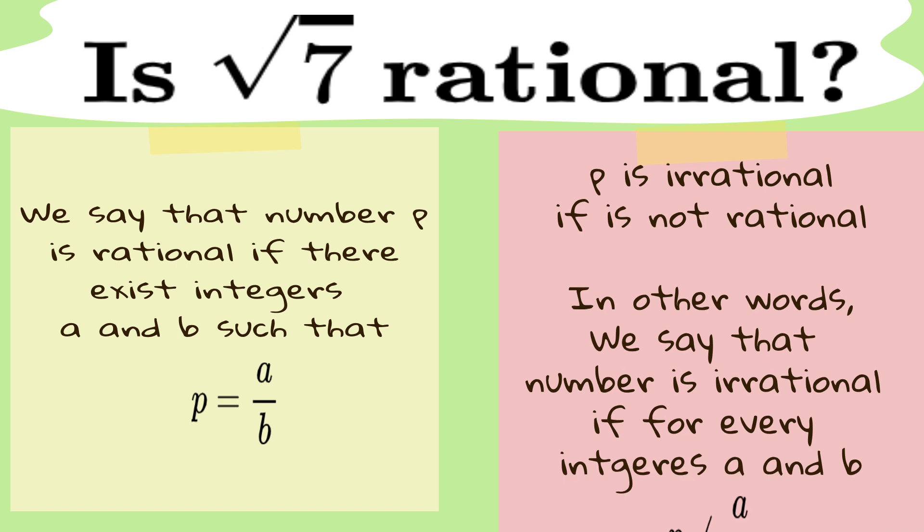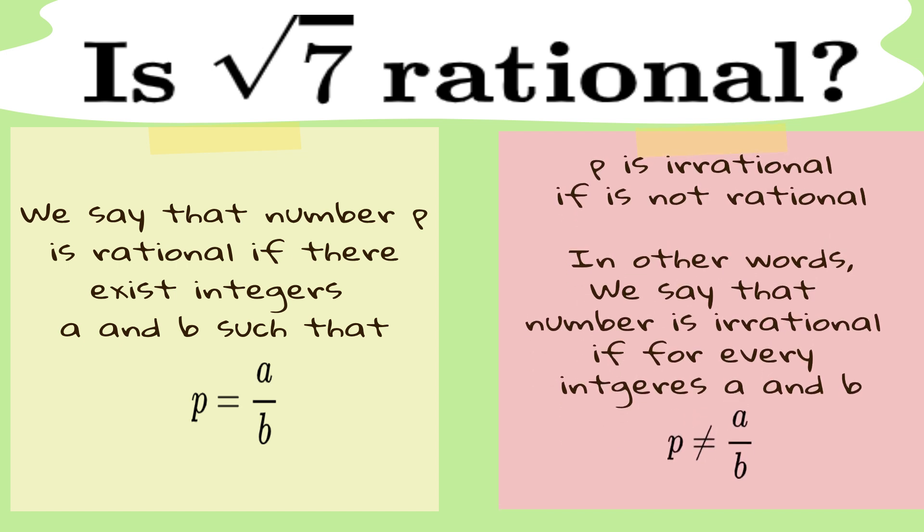Irrational numbers, on the other hand, are the rebels. They refuse to be written as a neat fraction a over b where a and b are integers and therefore their decimals go on forever, never repeating, like a story that just doesn't have an ending.